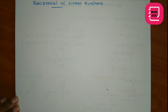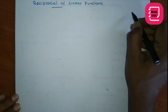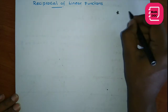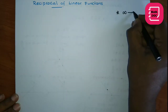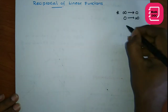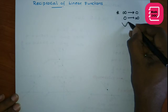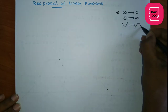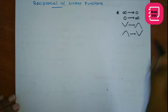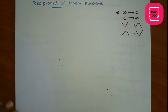Hi all, this is MatDoc. In this session we are going to discuss about the way of sketching reciprocals of linear functions. Here you need to remember: when getting reciprocals, infinity value goes to 0, and 0 value goes to infinity, and minimum turns to maximum and maximum turns into minimum. Those are the properties of reciprocals.